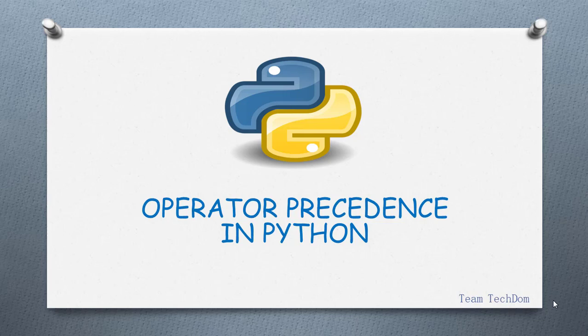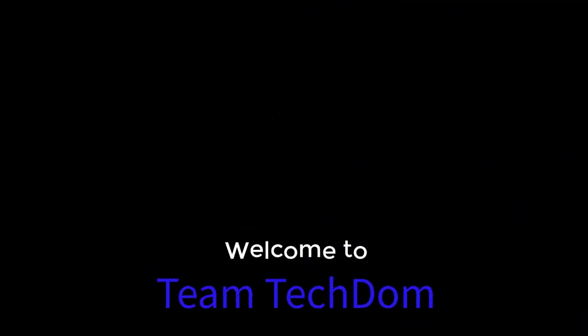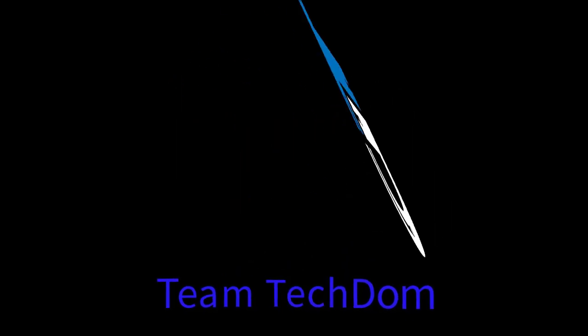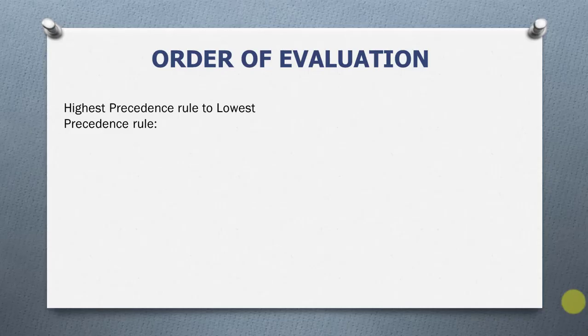Hello and welcome to Team Techdom. In this video, we will learn about operator precedence in Python. In a numeric expression with more than one arithmetic operator, we need to know which operator has a higher priority. Here's a list that shows the order from the highest precedence to the lowest precedence rule.